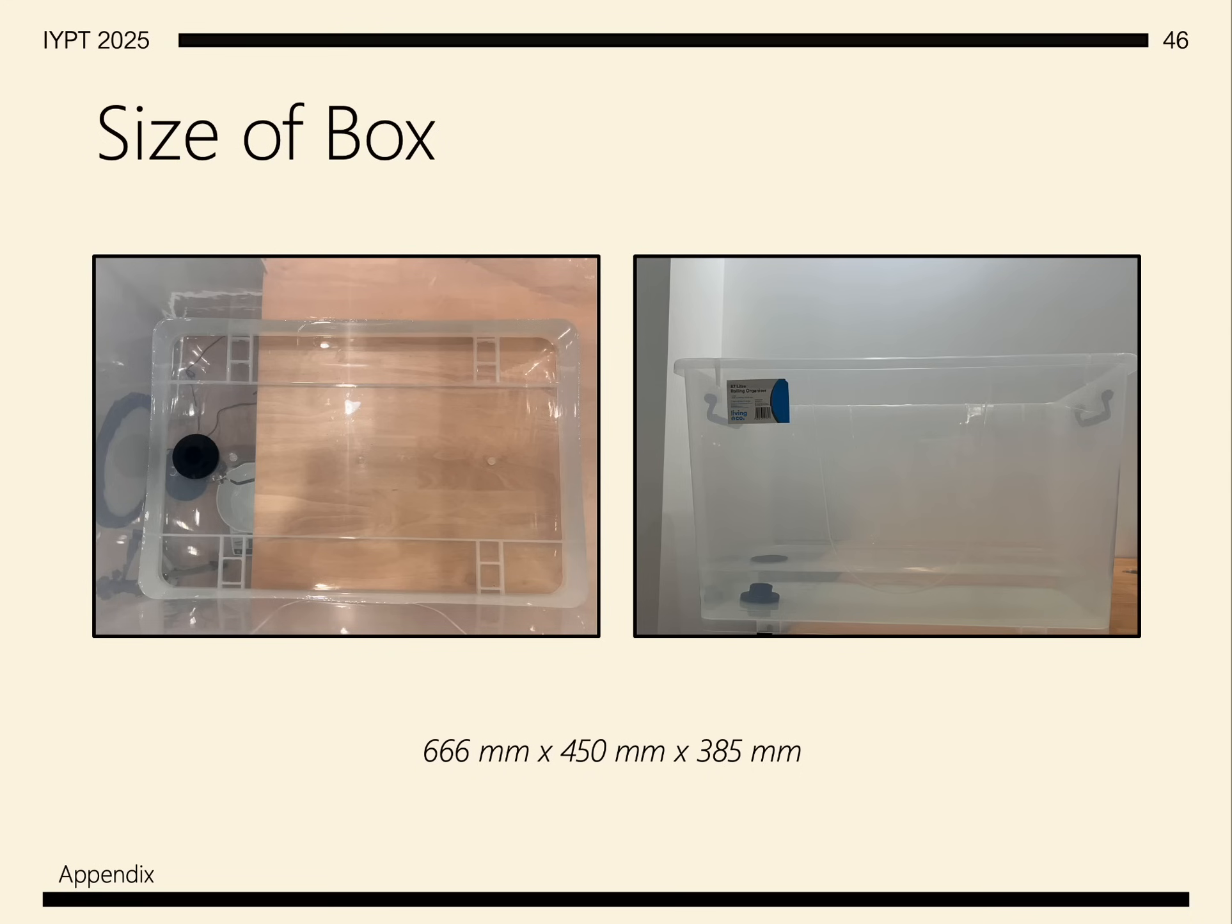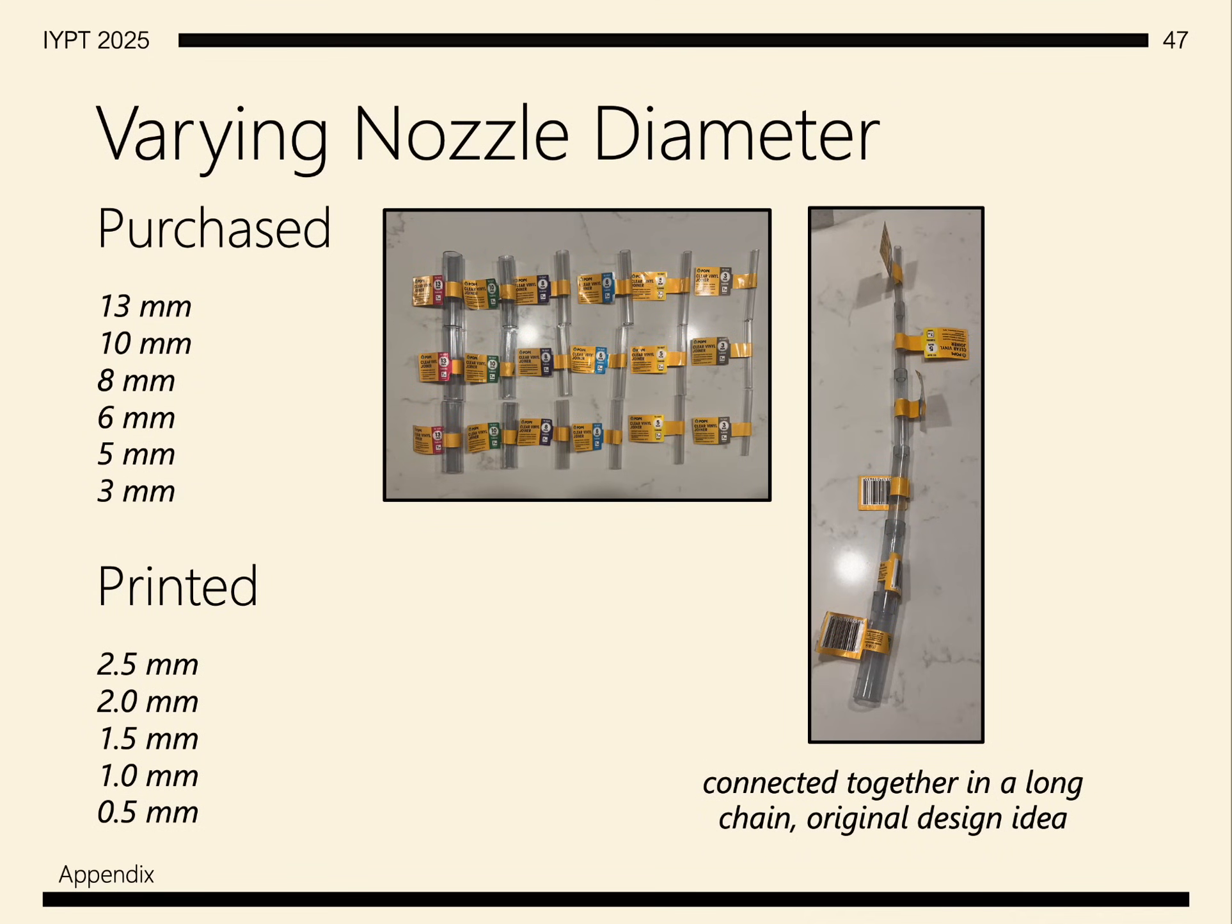The size of the box was chosen to be very large to prevent the pressure from changing a lot, which affects the flow rate. We varied the nozzle diameter in two ways: one way by using different purchased parts, and the other way by using 3D printed parts, which may be more versatile.